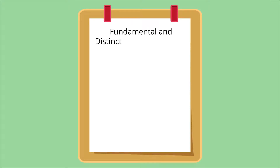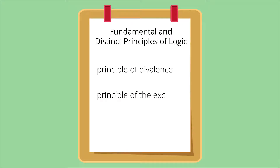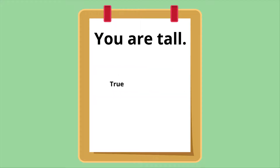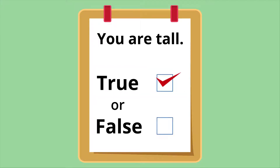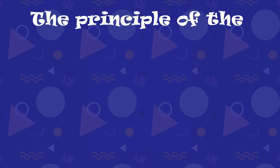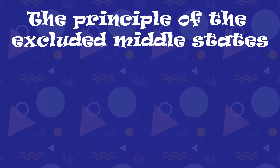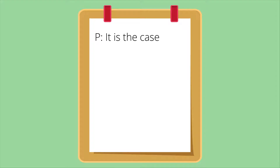Two fundamental and distinct principles of logic are the principle of bivalence and the principle of the excluded middle. The principle of bivalence states every statement is true or false. The principle of the excluded middle states: for any statement p, p or not-p must be true.